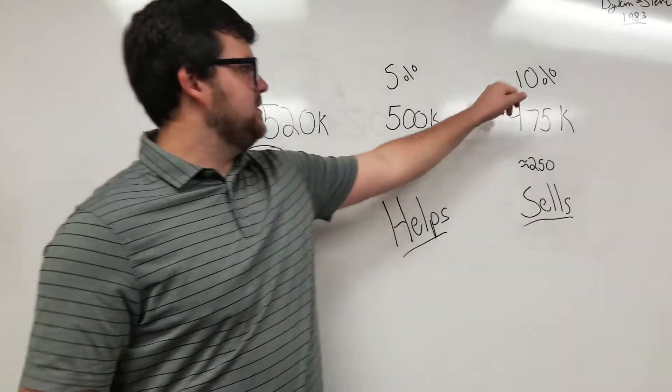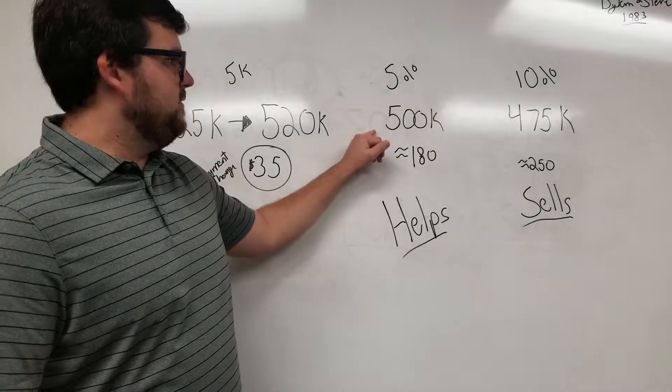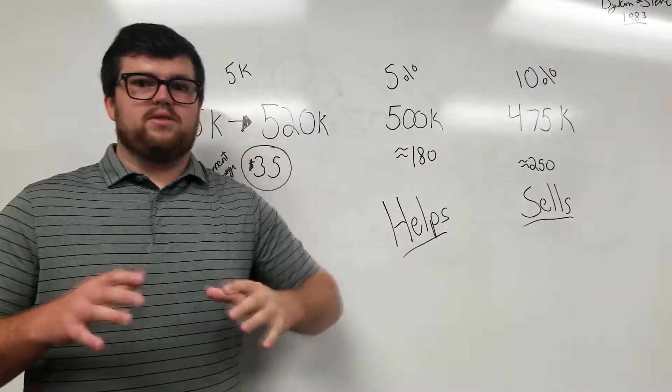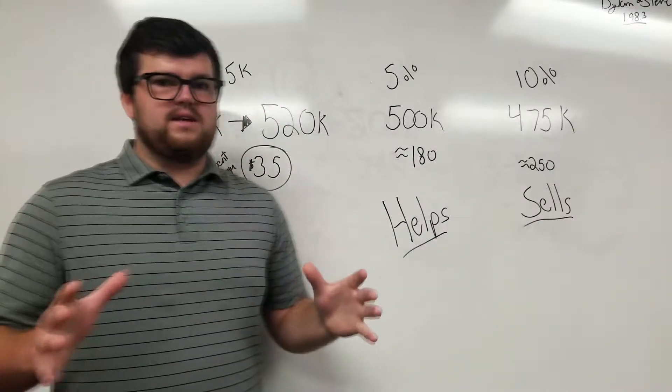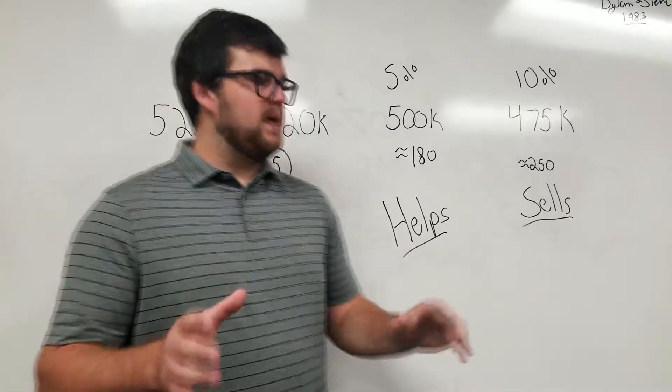Now, the saying in the industry is '5% helps, 10% sells.' At 5%, you're going down to $500,000. That's about a $180 a month drop - that is very significant and that will open up your pool to a ton of new potential buyers.